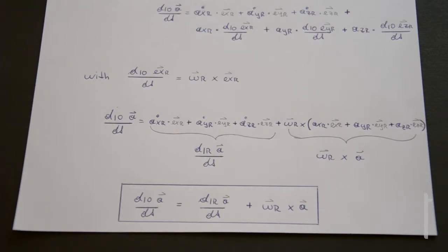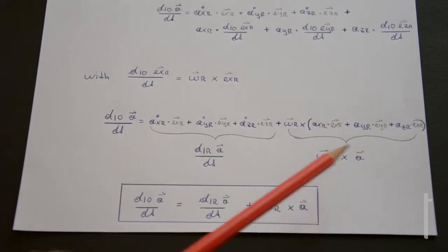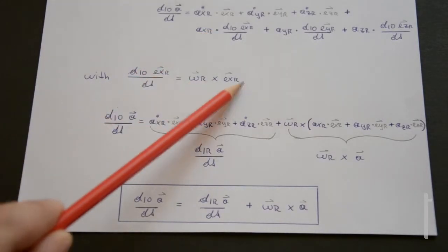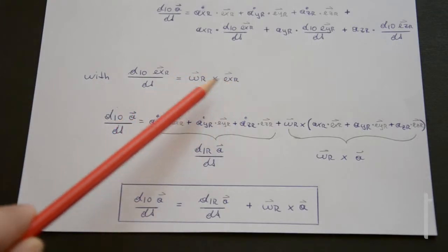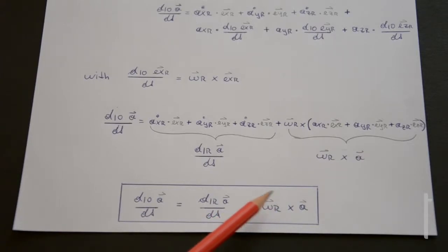You can see that it consists of two parts: on one hand, this is nothing else than the vector derived with respect to the rotating frame of reference, plus ω_r cross the vector A itself. Note that originally it would be A_xr times ω_r × e_xr, but since these are vectors and A_xr is a scalar quantity, we can simplify it in that way. And now we have found the first extremely important formula — not just valid for kinematics of relative motion, but usable every single time we have a rotating frame of reference: the derivative with respect to the inertial frame equals the derivative with respect to the rotating frame plus ω_r × A.